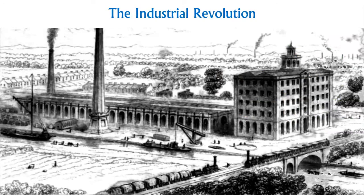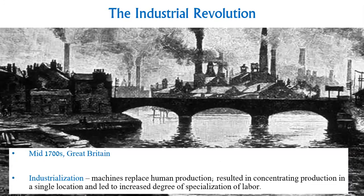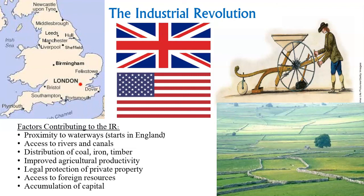Now for the Industrial Revolution — yes, another revolution — which started around the mid-1700s in Great Britain. Industrialization is when the machine starts to replace human production, concentrating production in a single location and leading to an increased degree of specialization of labor. What contributed to this? Being close to water helped because waterways are still a big deal in transportation — rivers and canals provide access to ships carrying coal, iron, and timber. There was also legal protection of private property, access to foreign natural resources, and a large accumulation of capital. Transportation, natural resources, money, food, coal, iron, timber, and land — the conditions were set to innovate and move forward.